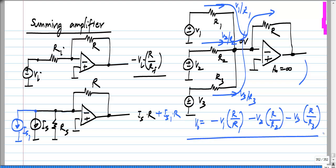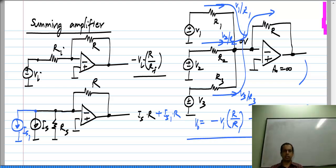So we get a weighted summation of the three input voltages, and that is why this circuit is known as the summing amplifier.